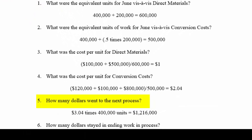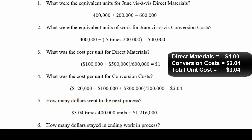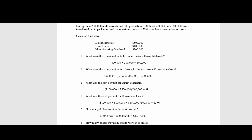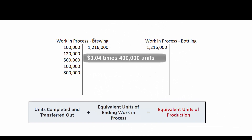Next, the problem wants to know how many dollars move on to the next process. It's $1.00 for materials and $2.04 for conversion costs, so this month it cost us $3.04 to make a unit. $3.04 times the 400,000 units transferred out: we credit work in process brewing and debit work in process bottling for $1,216,000 — that's $3.04 per unit times 400,000 units.